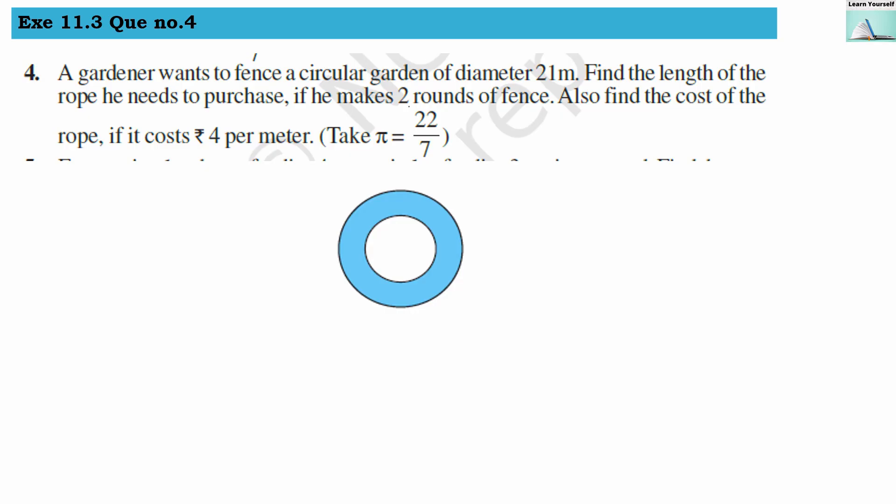Welcome to Learn Yourself. Exercise 11.3, question number 4. A gardener wants to fence a circular garden of diameter 21 meters. So our diameter here is 21 meters.